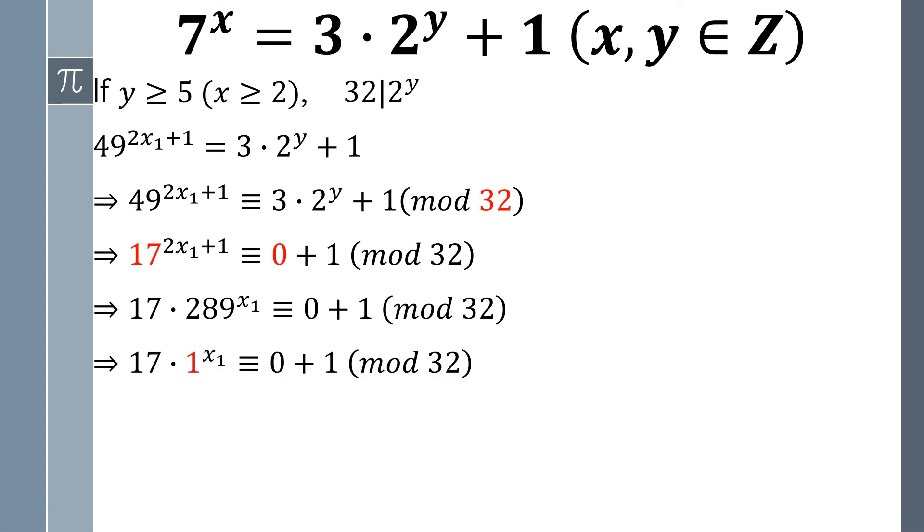And from here, the congruent relationship becomes 16 is congruent with 0 modulo 32, which is definitely wrong. That means there is no solution here.